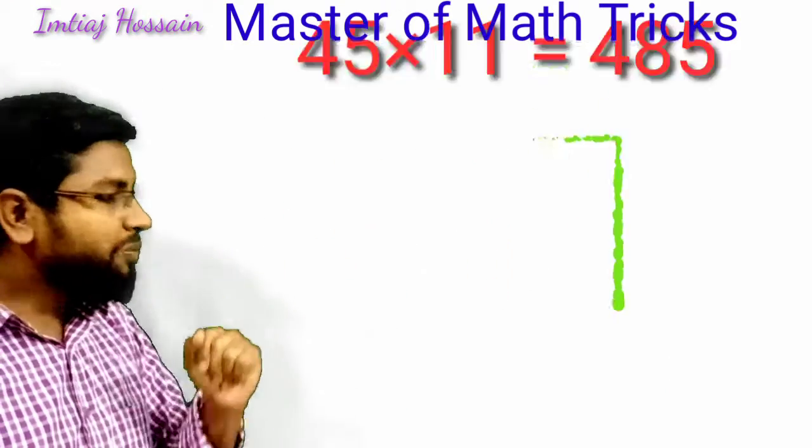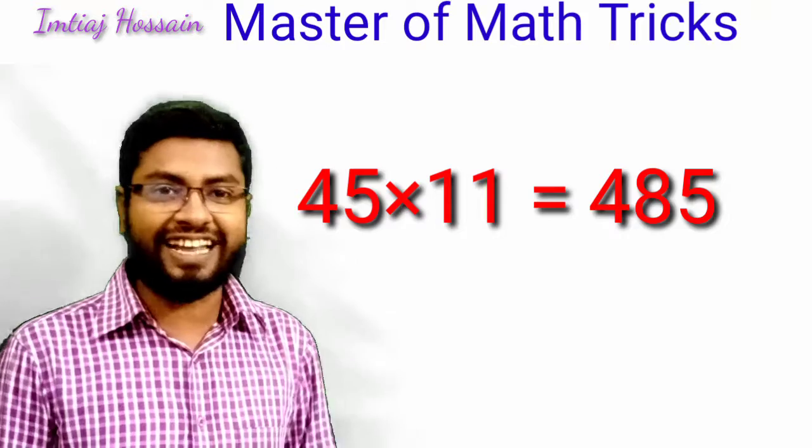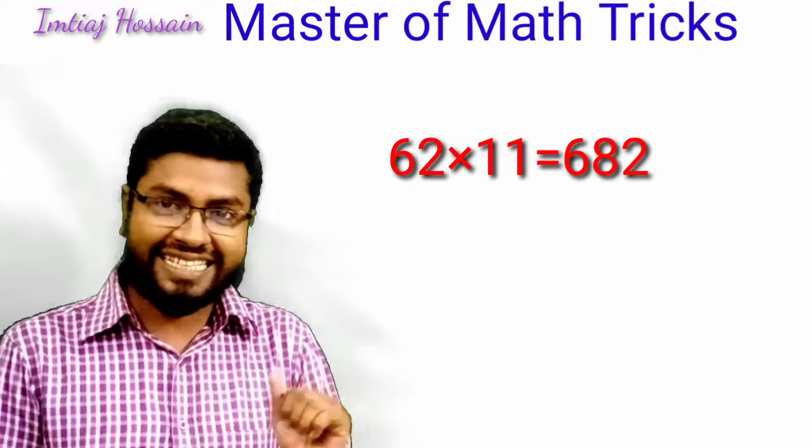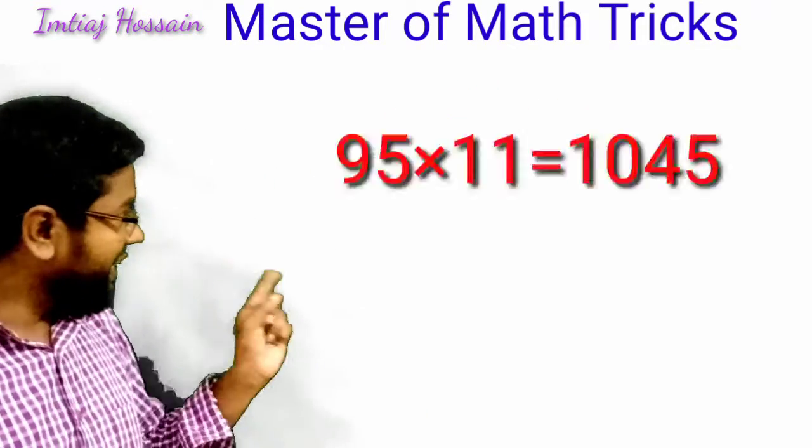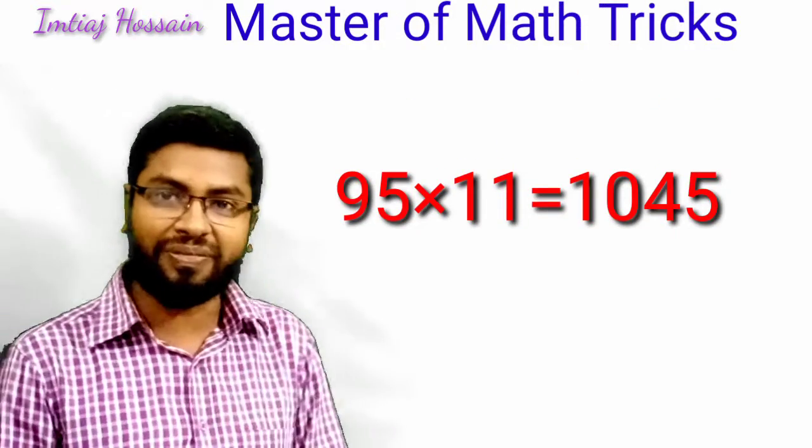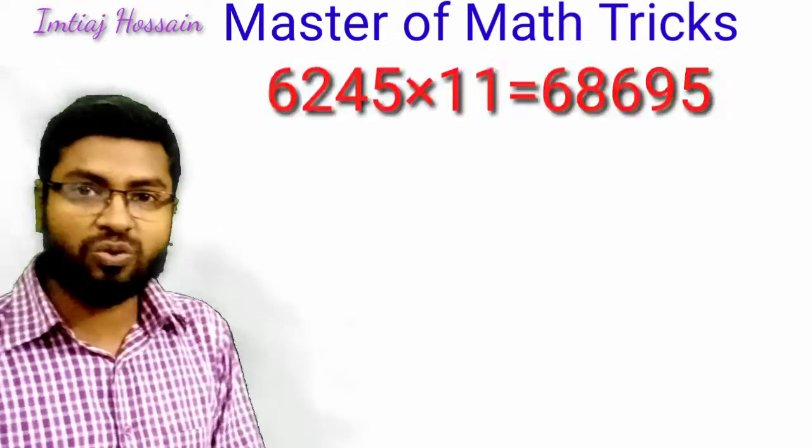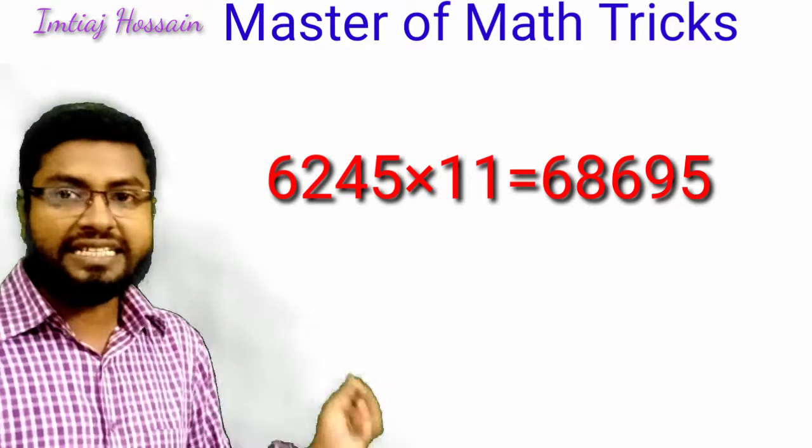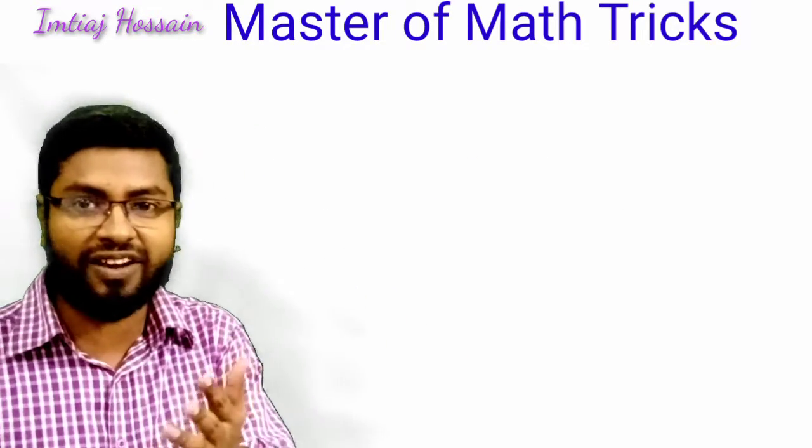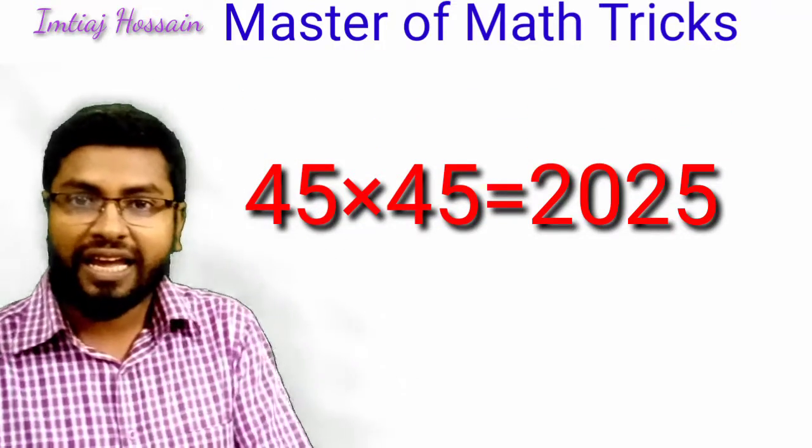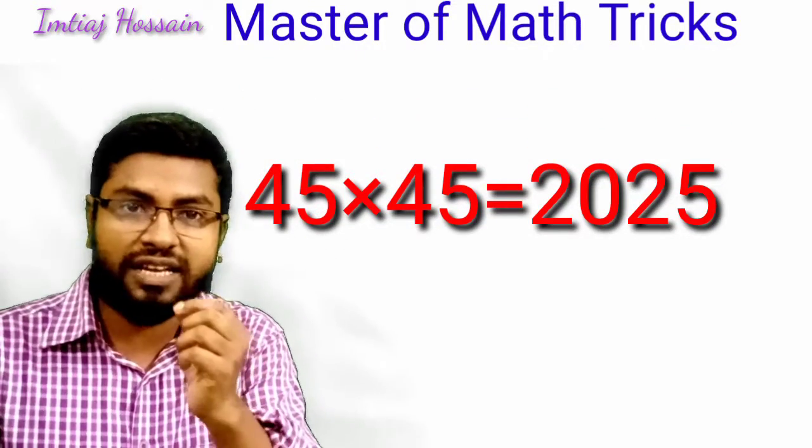45 times 11 equals 495. 62 times 11 equals 682. 95 times 11 equals 1,045. 6,245 times 11 equals 68,695. 45 times 45 equals 2,025.